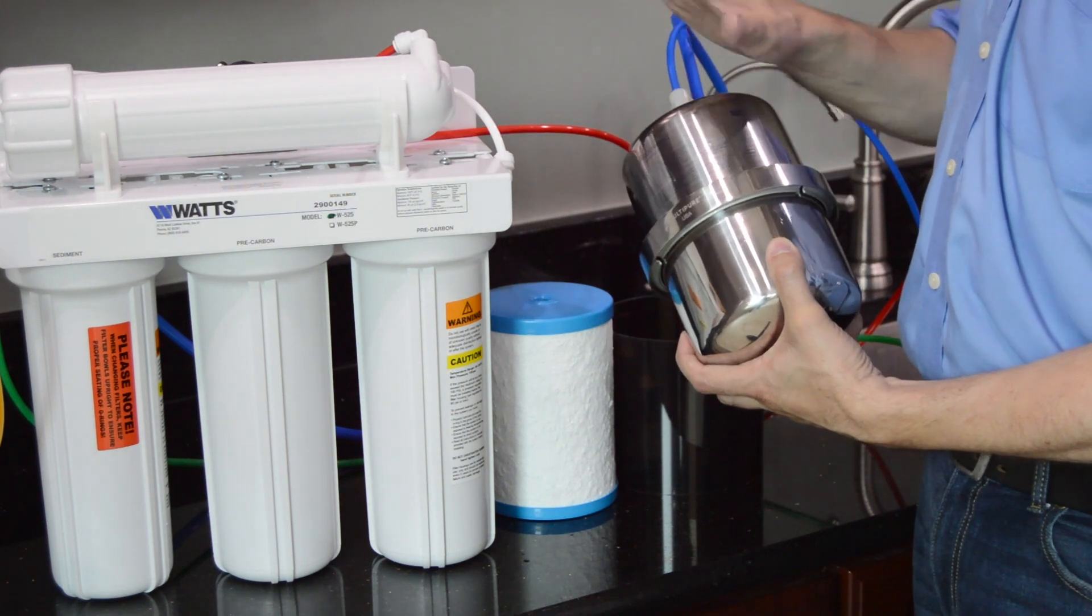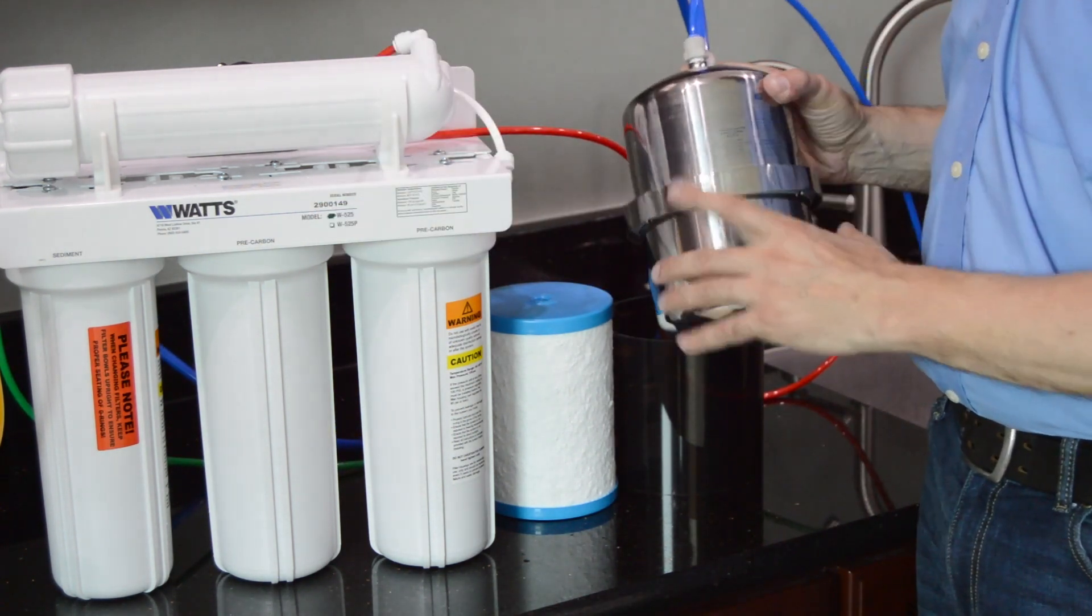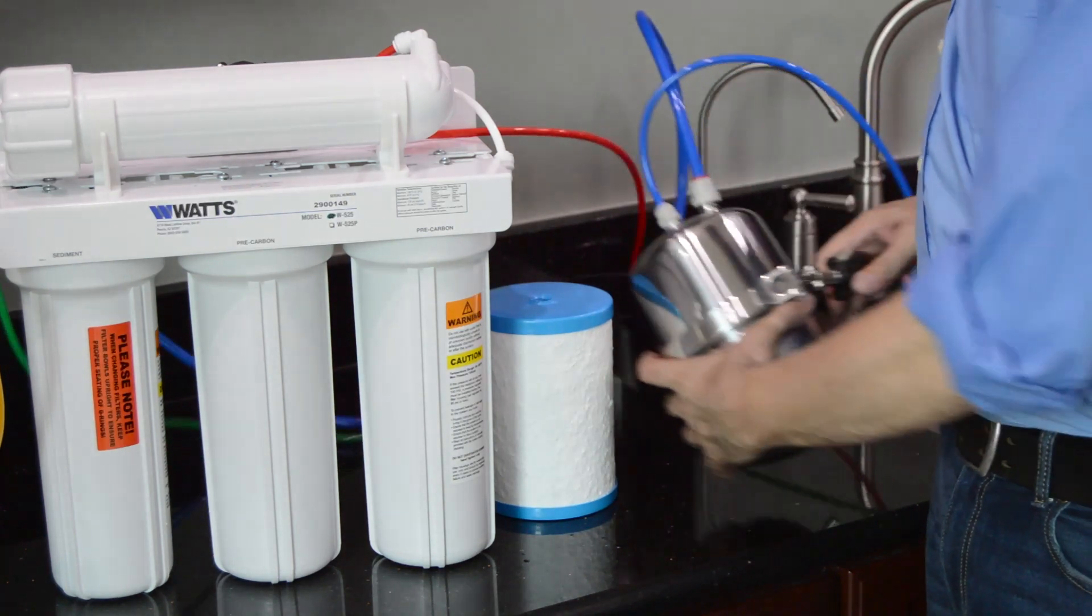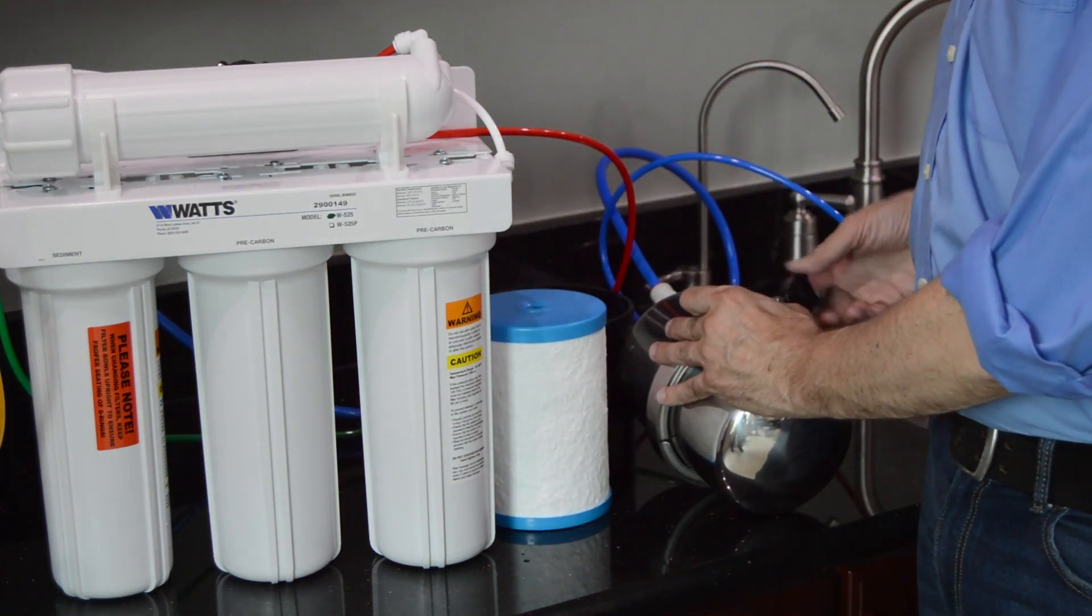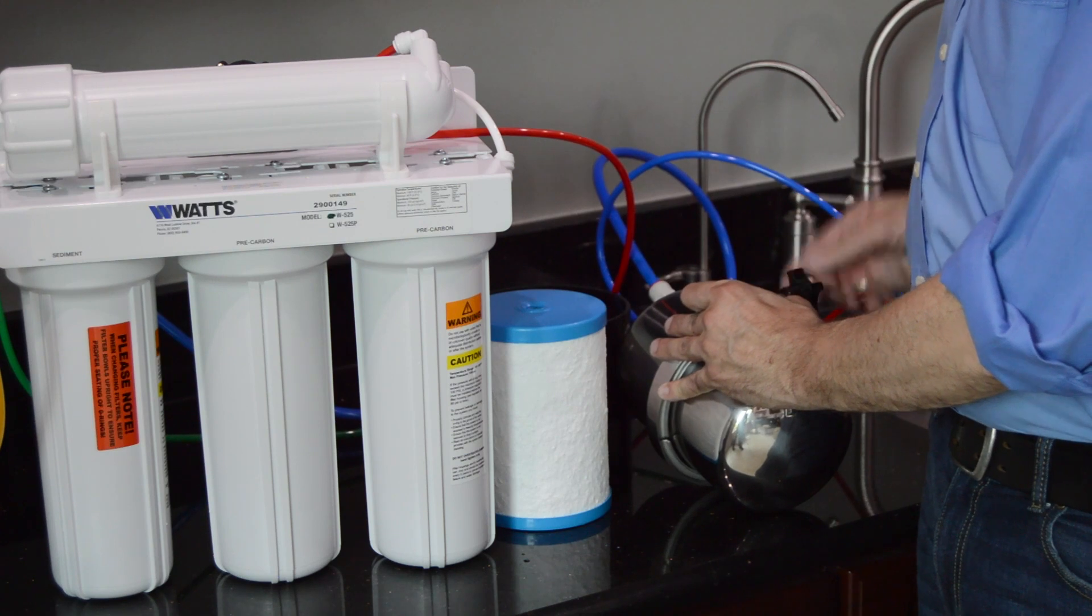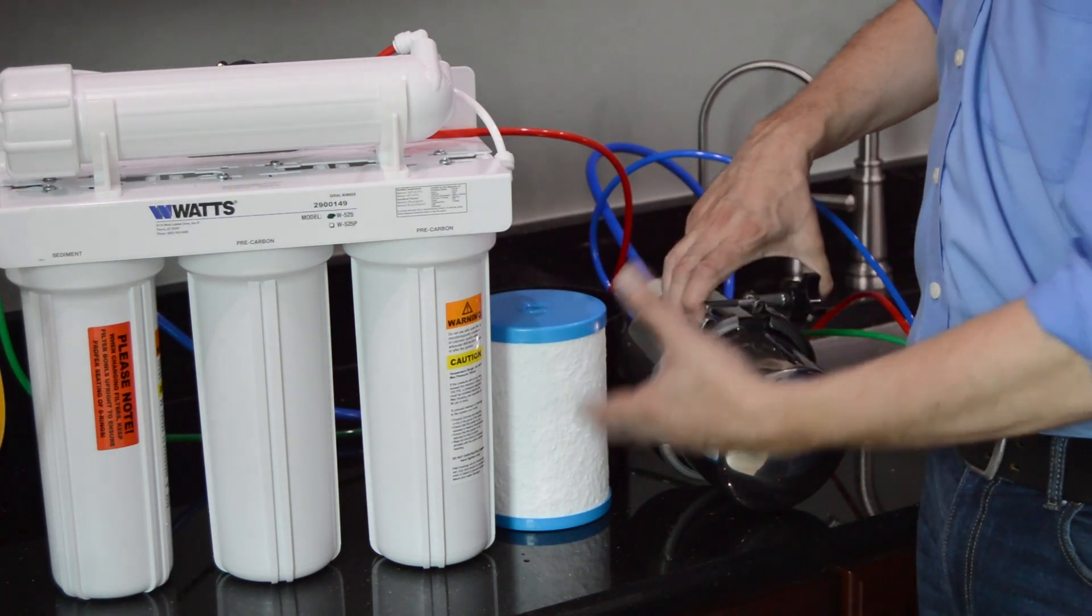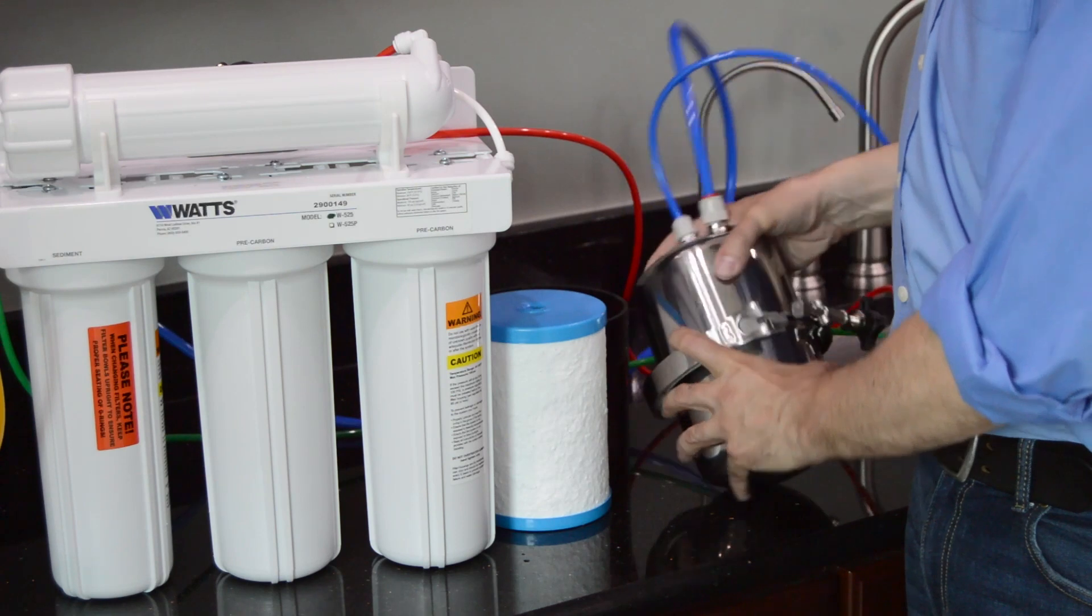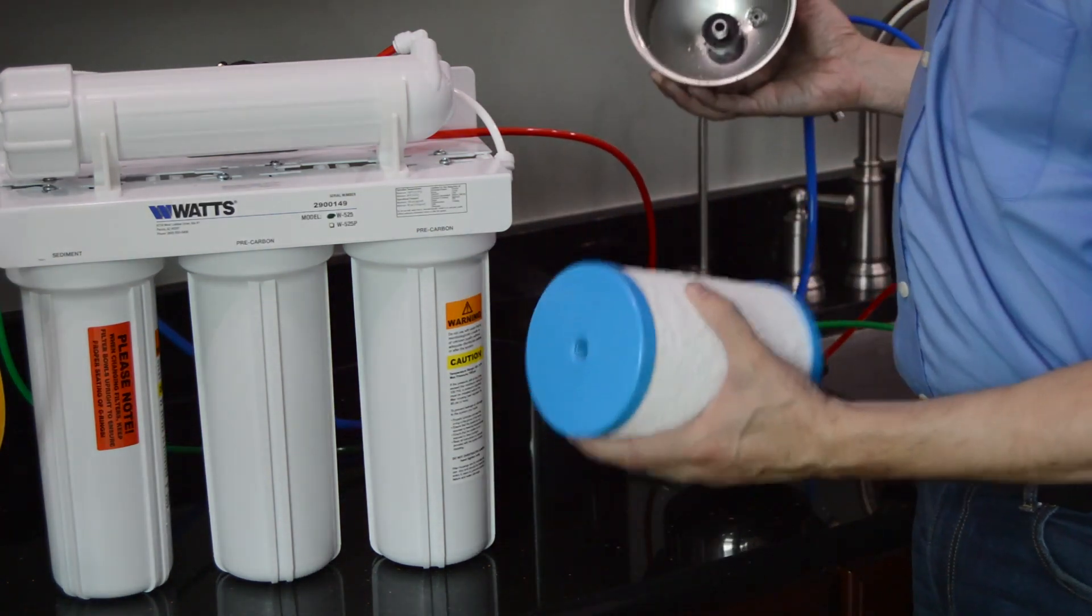Make sure the water is turned off below the sink and at the holding tank. Place the system in a basin to catch any excess water. Loosen the locking v-band on the post filter system housing. Open the system housing and remove the old filter. Pour out any excess water.